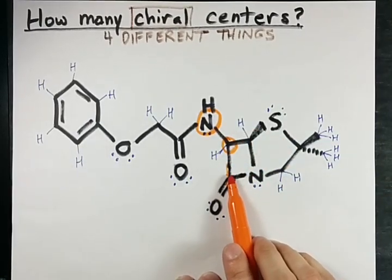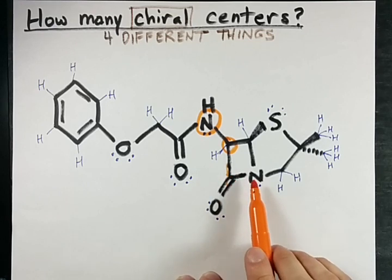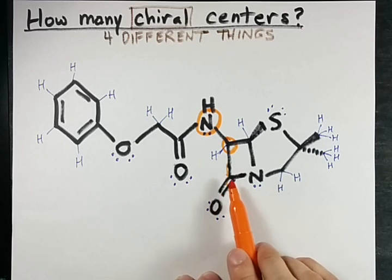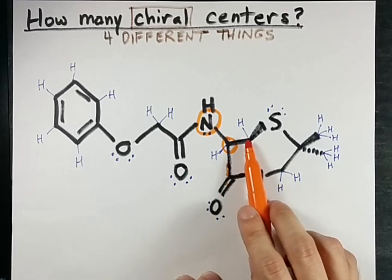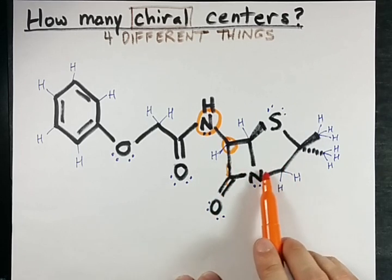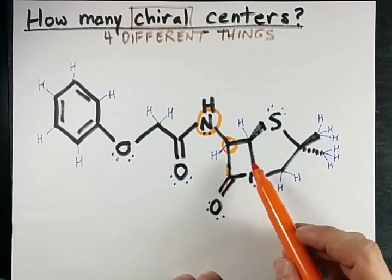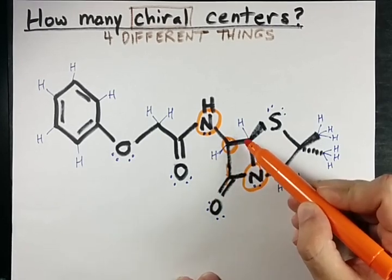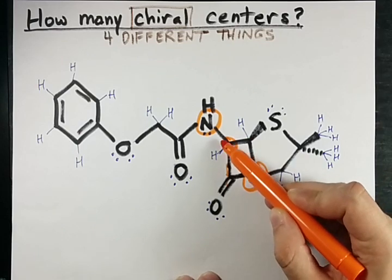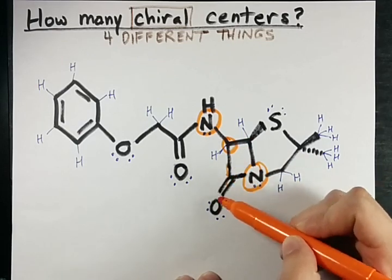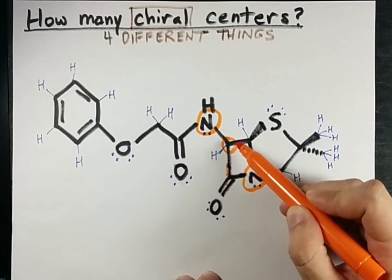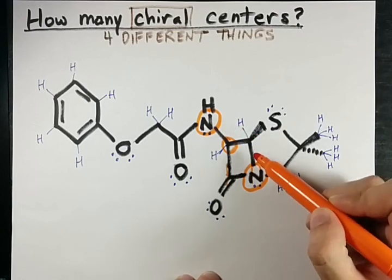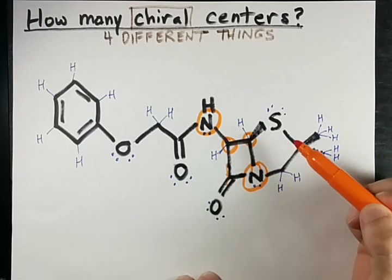This atom is only connected to three things — not chiral. This next center is connected to a C double bond O, a C single bond S, a CH2 group, and a lone pair — those are all different, so it's chiral. And this atom is connected to CH, nitrogen, carbon-oxygen, a sulfur here, nitrogen here, and hydrogen here — it's chiral. That gives us chiral centers three and four.